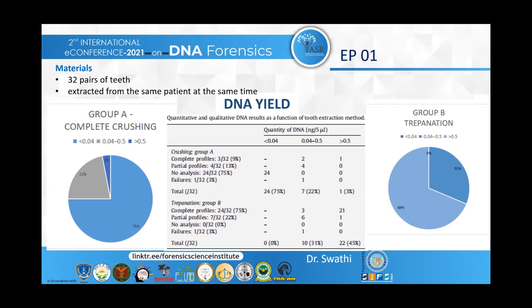The quantitative and qualitative DNA yield — as you can see in the table — from Group A showed results ranging from 0 to 1 nanogram. Out of the 32 teeth, for 24 teeth, less than 0.4 nanograms of DNA was collected and analysis could not be performed. For 7 teeth, between 0.4 to 0.5 nanograms were collected and concentrated twice before use. For one tooth, more than 0.5 nanograms was collected and one complete profile was obtained. For the 7 concentrated teeth, four partial profiles, one failure, and two complete profiles were obtained.